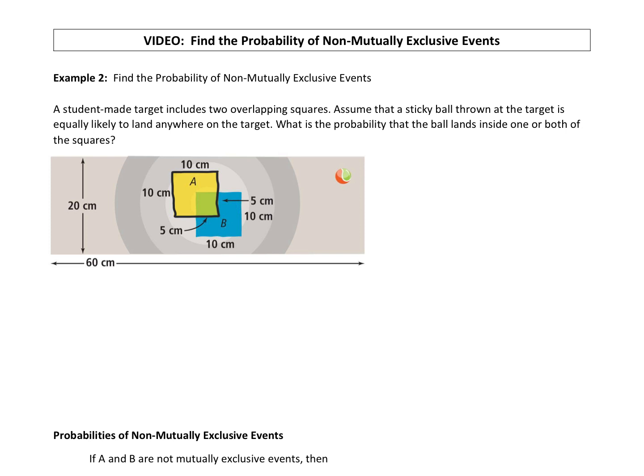When we find what we refer to as geometric probabilities, it comes down to probabilities using areas. We're going to find the areas of a few things first, and then we'll talk about how to set up our probability. The total area is the area of the whole target. It's 60 centimeters long by 20 centimeters high, so 60 times 20 gets us a total area of 1,200 centimeters squared.